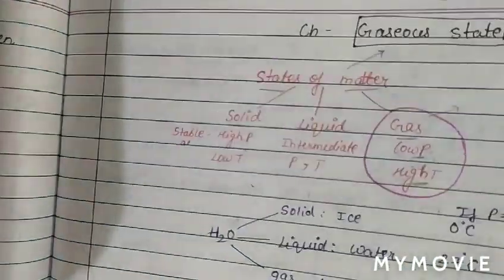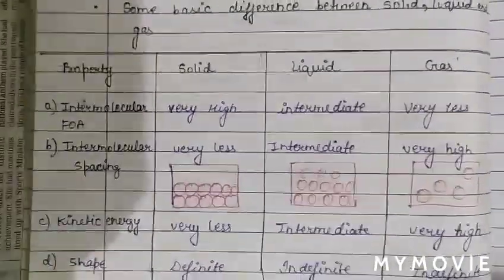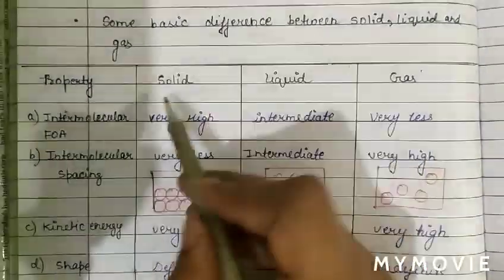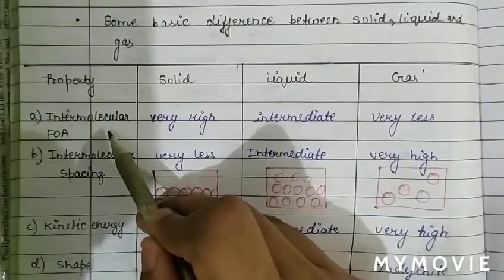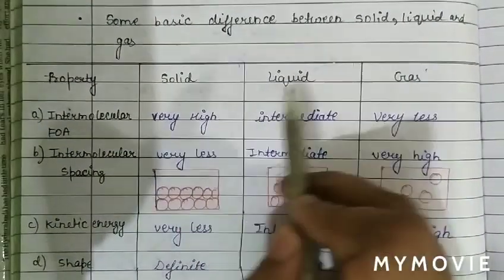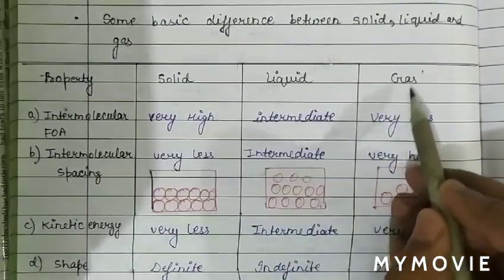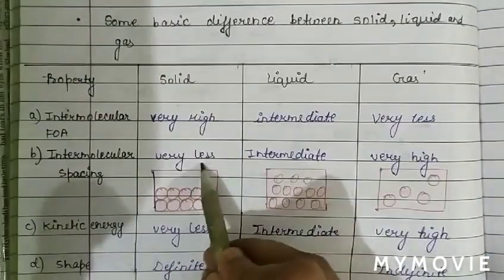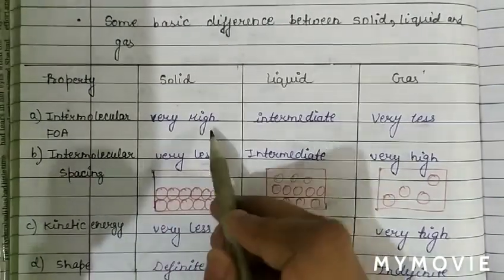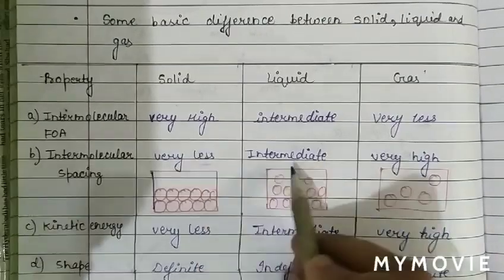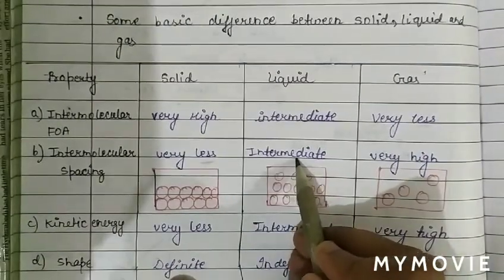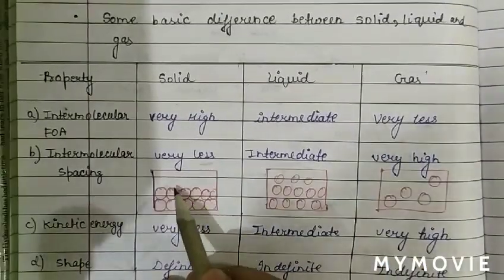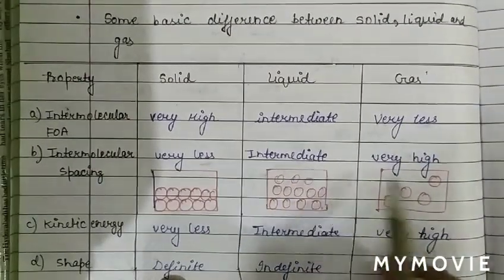The major difference between solid, liquid, and gas is based on intermolecular forces. In solids, intermolecular forces are very high, in liquids they are intermediate, and in gases they are very less. The distance between particles in solids is very less, hence intermolecular force is very high, while intermolecular distance in liquids is intermediate and in gases it is high.